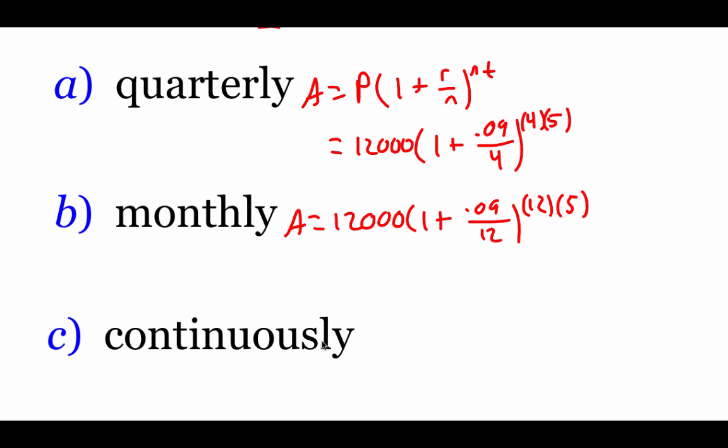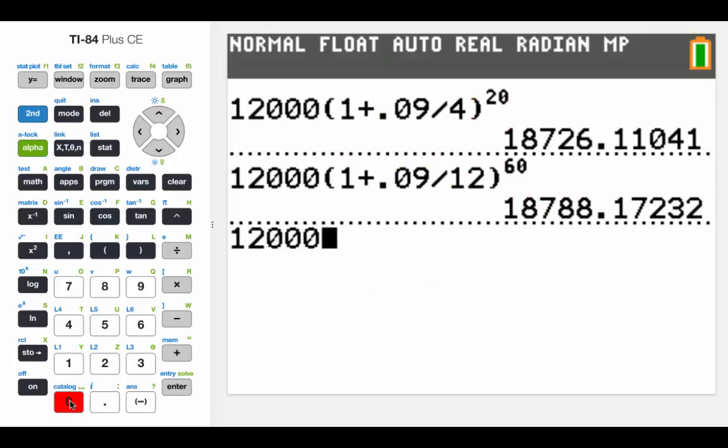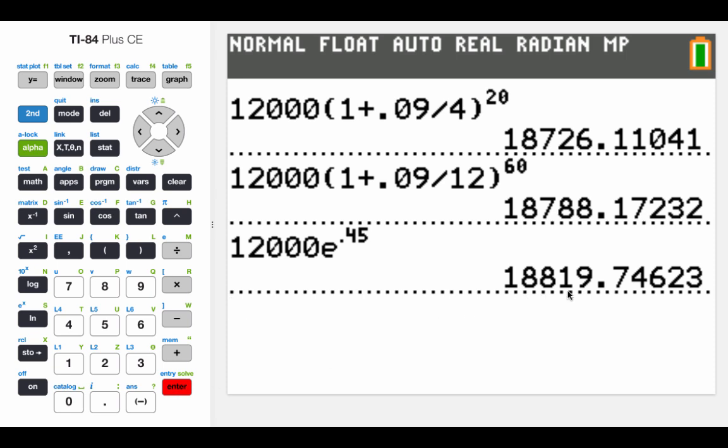Now for this last one, we're going to do continuously compounding, so we have to adjust our formula a little bit. It's going to be that PE to the RT power formula. So if I start plugging numbers into this one, our principal amount is still $12,000. Remember, E is a number. And for the power, our rate is 0.09 because we want that thing to be a decimal again, and our time frame is still five years. So now for this one, I'm going to type this into my calculator. Typing this power in, if we take 0.09 times 5, we get 0.45. Hitting enter, we get $18,819, and we would round this to 75 cents.